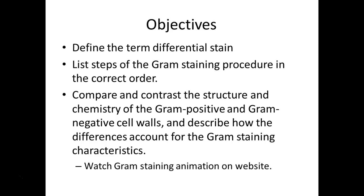For the gram stain, you need to know the steps in the procedure: what dyes are used, what the decolorizer is and when it's used. You get two results from the gram stain. A positive result means the cells stain purple and stay purple — I always remember P for purple. Gram-negative cells do not retain the crystal violet and stain with the counterstain we use, which is safranin, a red dye. They appear pink instead, just a lighter shade of red.